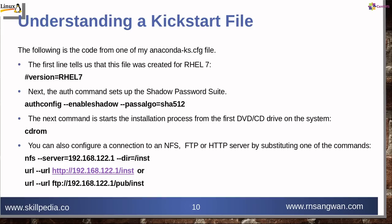Understanding the kickstart file — the following is code from my anaconda-ks.cfg. The first line tells it was created for RHEL 7, but for RHEL 8 it would be version=RHEL8. The authentication command sets up the shadow password suite: authconfig --enableshadow with password algorithm SHA-512.